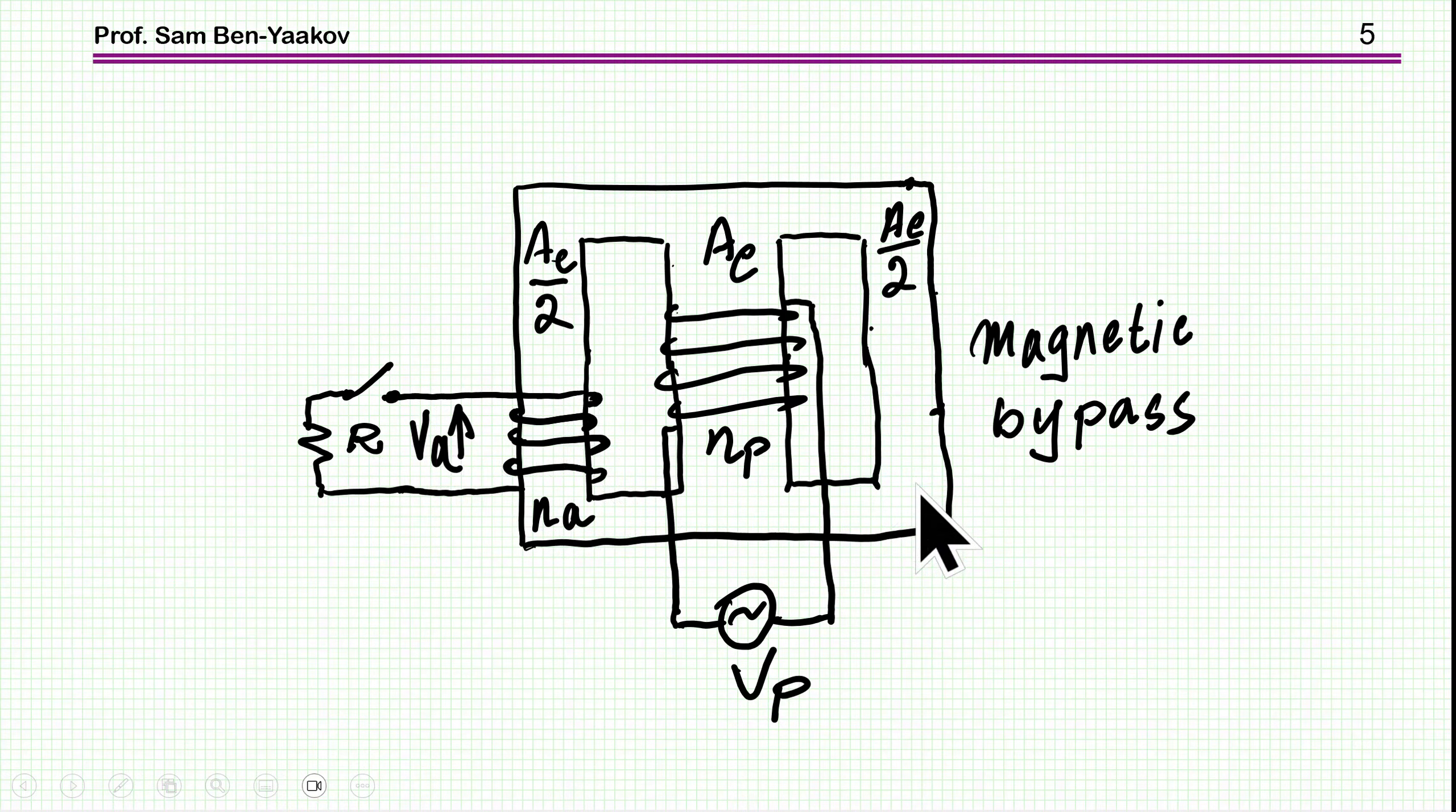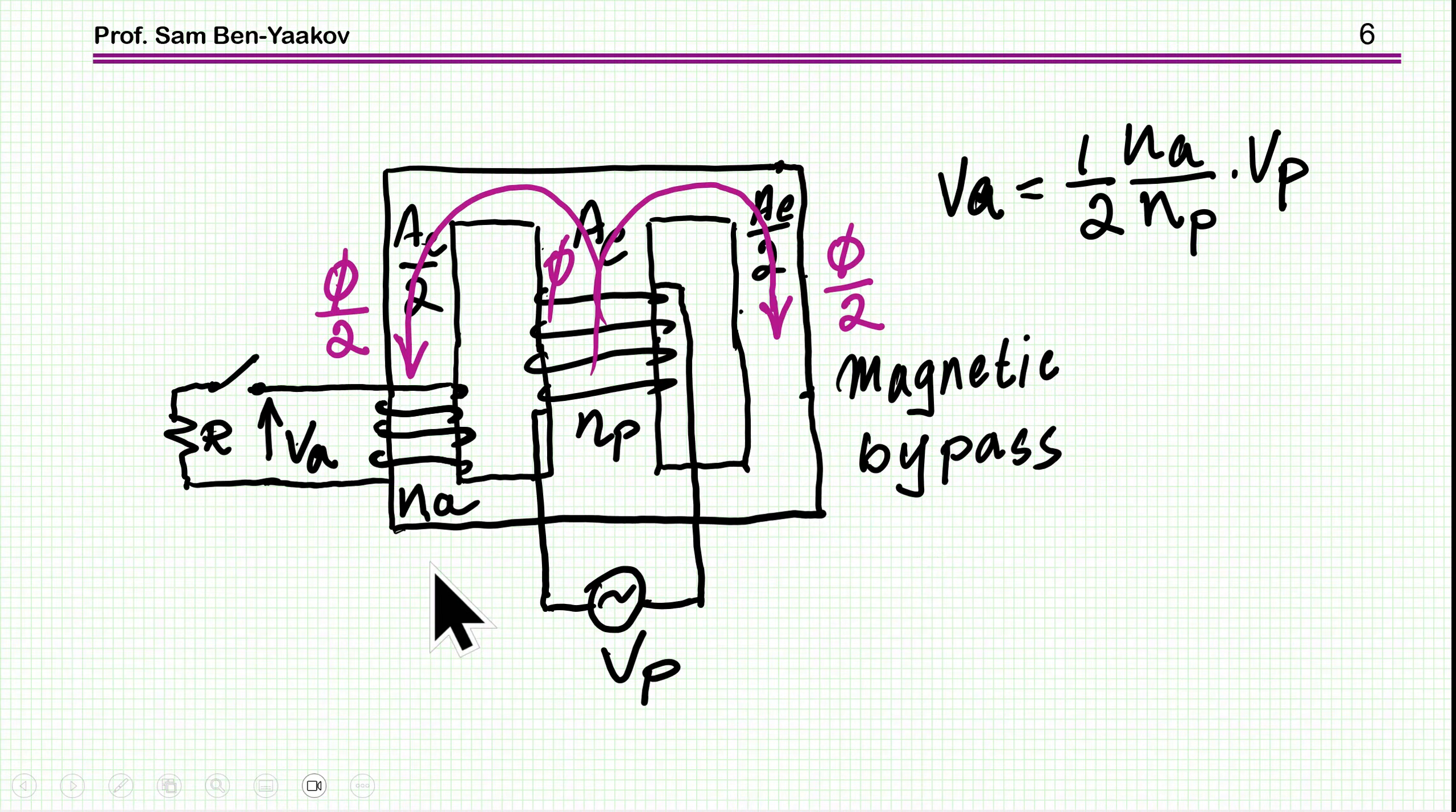So the unique feature of this element of this device is that we have a free leg here. There's no winding on it. Now, if the switch is off, that is non-conducting, then we have the flux coming from the source. Again, Faraday's law. And then the flux is actually divided into two parts, to the two side legs.